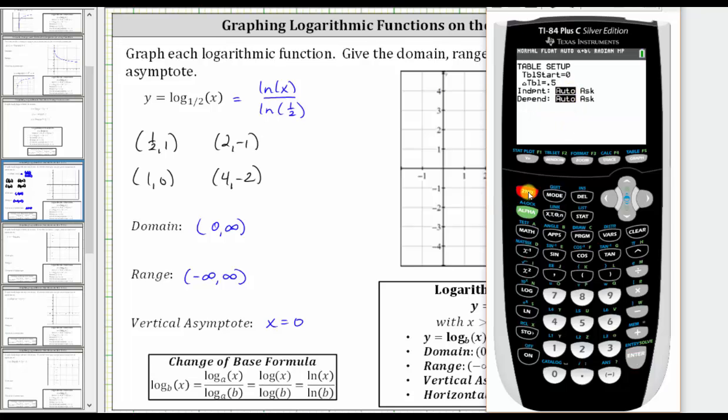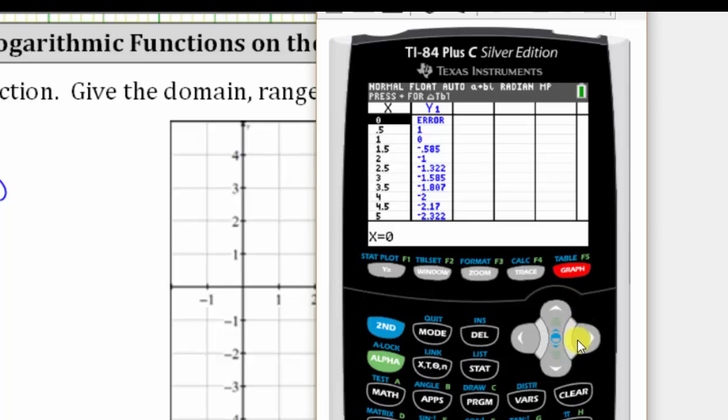So now if we press second graph, we can scroll down and again find convenient points to make our graph. Here's 0.5 comma 1, 1 comma 0, 2 comma negative 1, and so on.